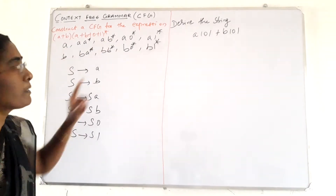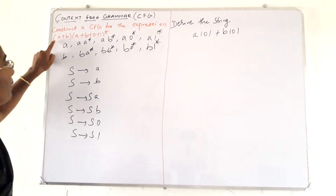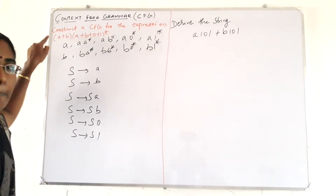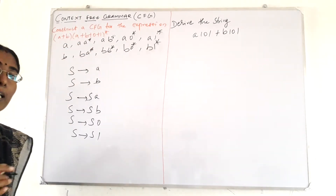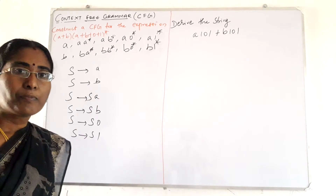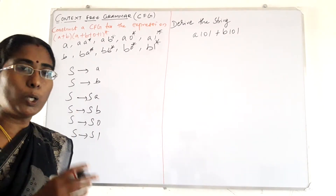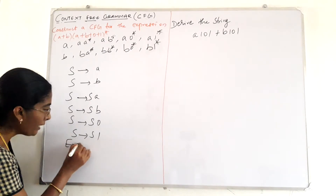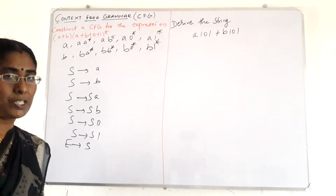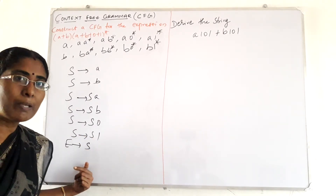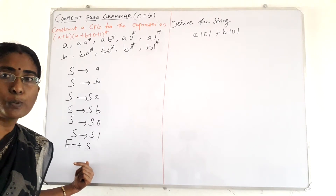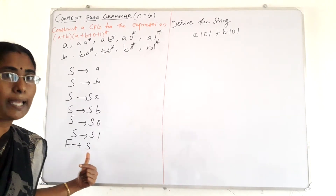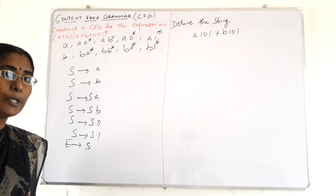What are the operators present in this expression? We have open bracket, close bracket, plus, and star — these are the 4 operators. A or B alone is itself an expression, so we write E implies S. S is a production that is replaced by either A or B.